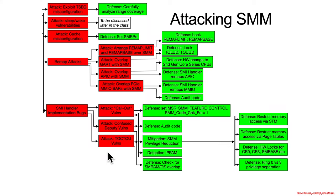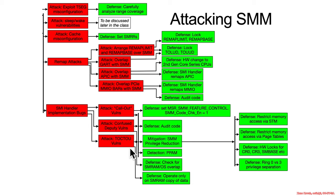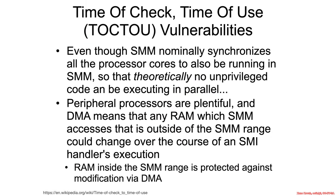Now we're going to introduce another general class of SMI implementation bugs: TOCTOU attacks — time of check, time of use. You can use the standard sort of defensive mechanisms, and as with most TOCTOU attacks, there is a defensive mechanism having to deal with not fetching data outside multiple times.